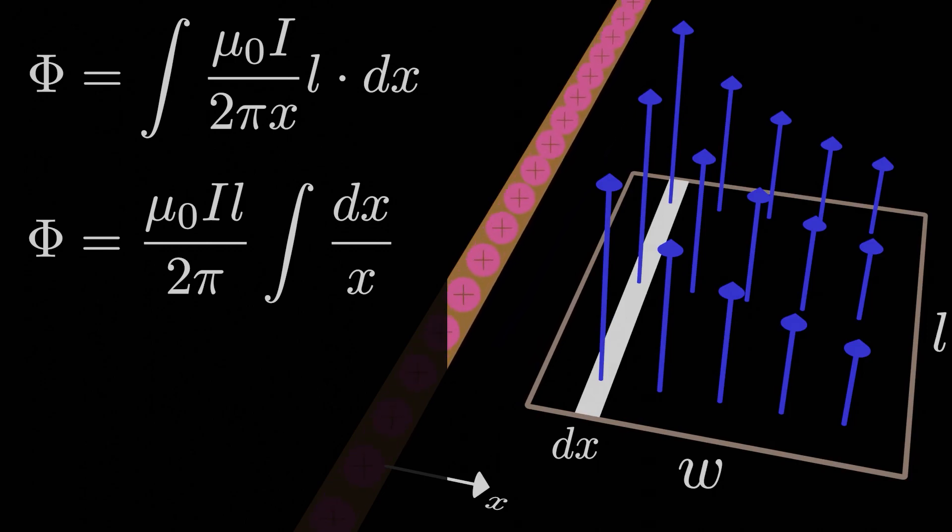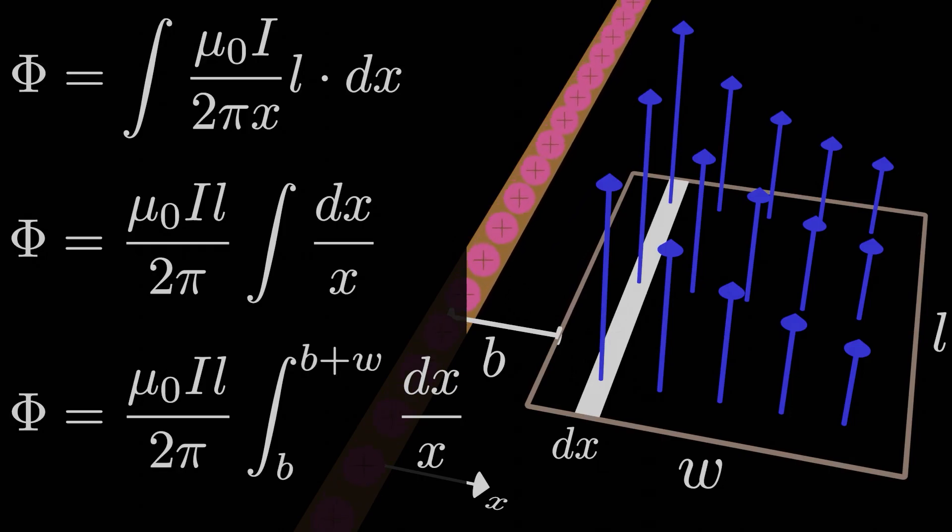A lot of the constant stuff can come out like mu-naught i over 2 pi and L. Our integral is just dx over x. Have you seen this one before? Before we get too ahead of ourselves, we need to define some bounds, so our bounds go from b, which we'll call the distance from the wire to the inner side of the loop, all the way to b plus w, which is just the distance to the outer side of the loop if w is the width of the loop.